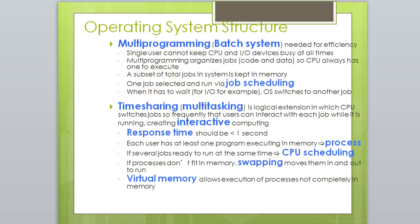For operating system structure, multiprogramming is best for efficiency, since a single user cannot keep the CPU and I/O devices busy at all times. Multiprogramming organizes jobs — code and data — so the CPU always has one to execute. A subset of the total jobs in the system is kept in memory, and one job is selected and run via job scheduling.